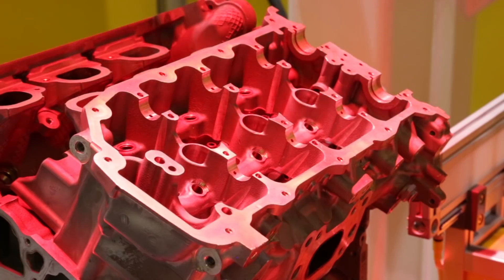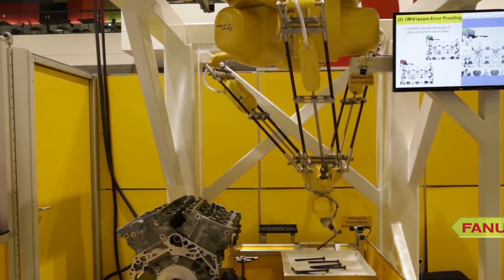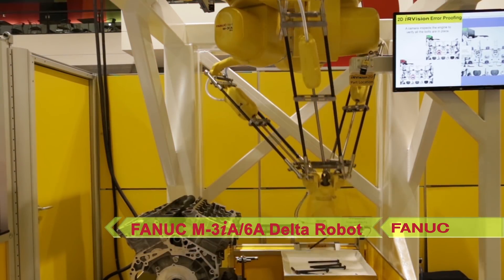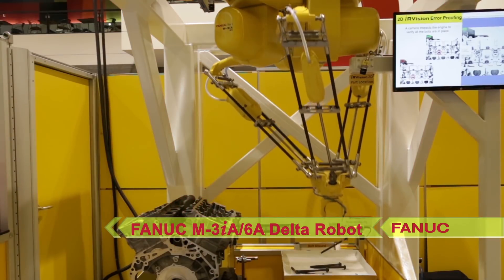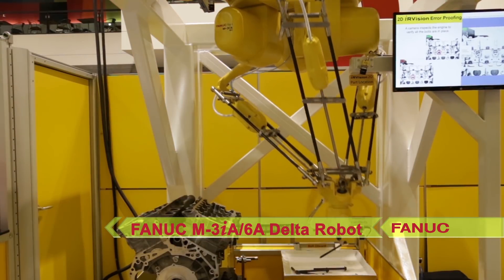In this demonstration, a FANUC M3IA-6A Delta robot is used to pick bolts from a tray and insert them into an engine casting.